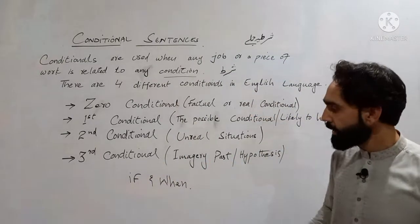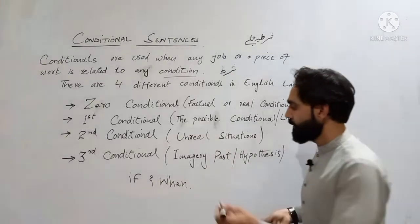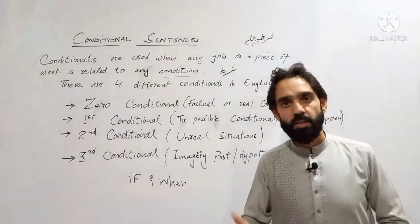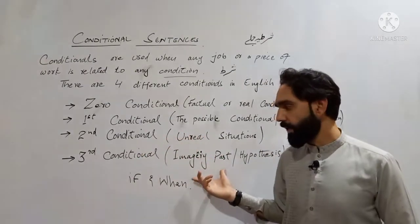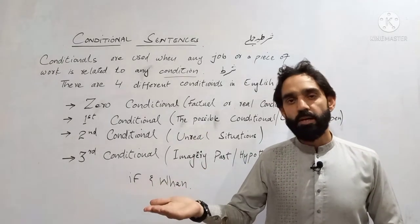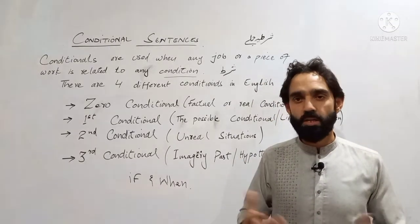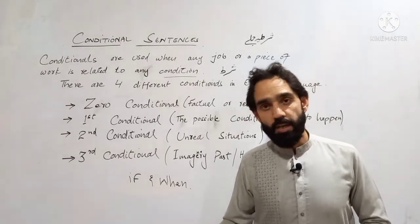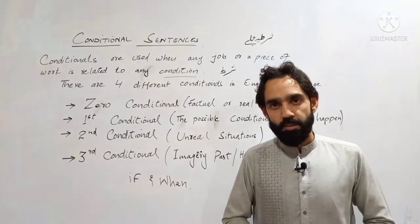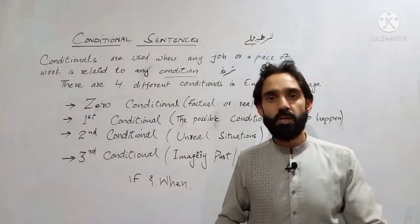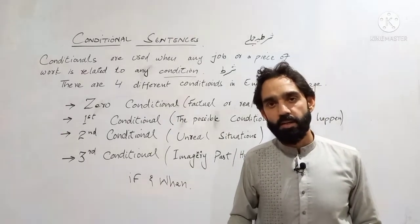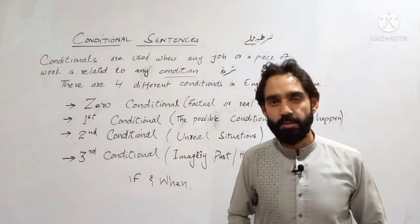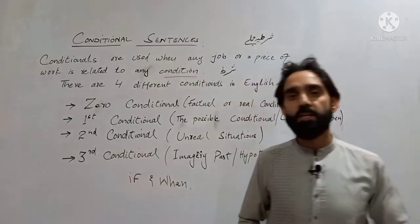And then we have the last one — third conditional, known as imaginary past or hypothesis. ماضی کے بارے میں جو کچھ ہو چکا ہے، اب ہم کچھ نہیں کر سکتے لیکن صرف اس کے بارے میں بات کر سکتے ہیں۔ مثال: 'اگر مجھے پتا ہوتا کہ انگریزی اتنی اہم ہے تو میں بچپن میں ہی انگریزی سیکھ لیتا۔' بچپن کا وقت گزر گیا ہے، واپس جانا ممکن نہیں — لیکن ہم ایک فرضی مفروضہ ظاہر کر رہے ہیں، کہ اگر پتا ہوتا تو میں بچپن میں انگریزی سیکھ لیتا اور آج اچھی انگریزی بول رہا ہوتا۔